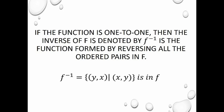If the function is one-to-one, then the inverse function of f is denoted by f raised to negative one. It is the function formed by reversing all the ordered pairs in f. So if the inverse f⁻¹ has coordinates (y, x), and you see the coordinates swapped to (x, y) in f, that means it is an inverse function.